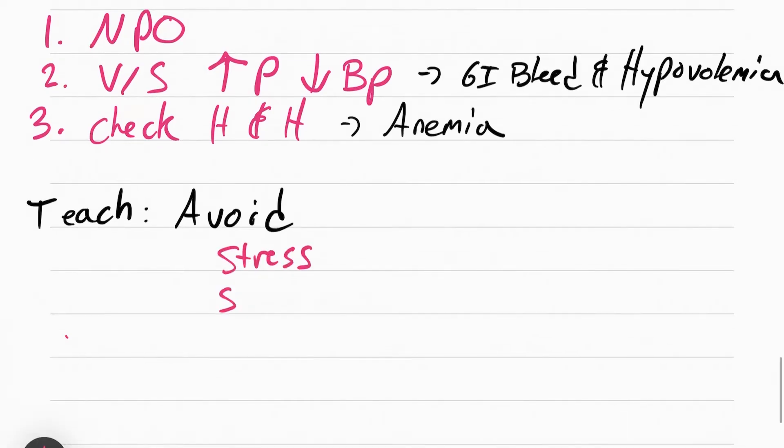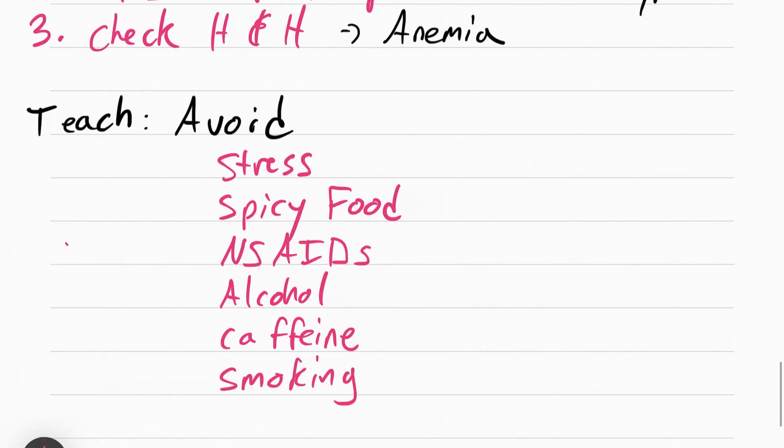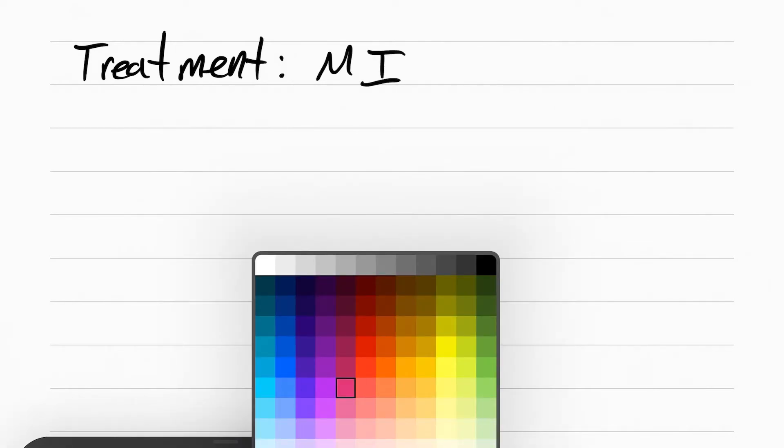You also want to teach the patient to avoid things that cause the ulcer to get worse, like stress, spicy food, NSAIDs, alcohol, caffeine, smoking, and chocolate. So basically being a nursing student. I'm just playing with you guys, but seriously, I know what you all eat.